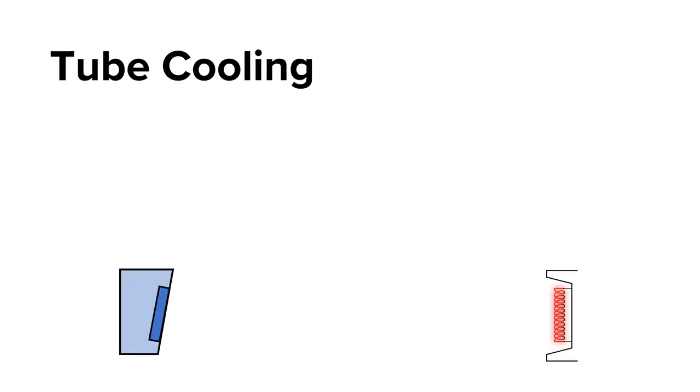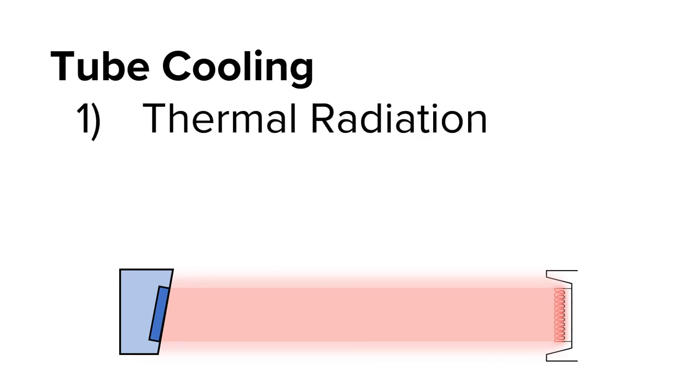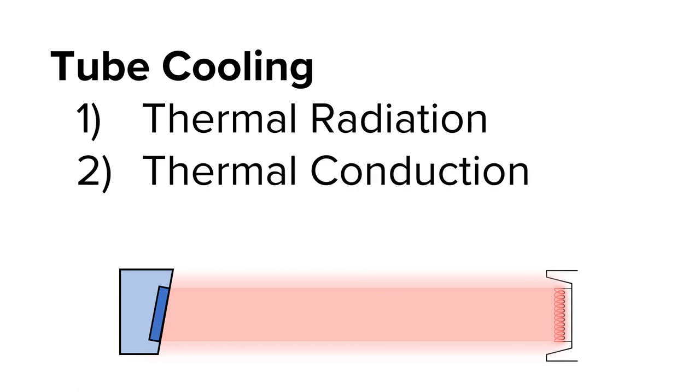Since heat is the main culprit for x-ray tube failure, and 99% of the incident photon beam gets converted into heat, how does the tube cool itself? The tube cools itself by dissipating heat through thermal radiation, conduction, and convection.